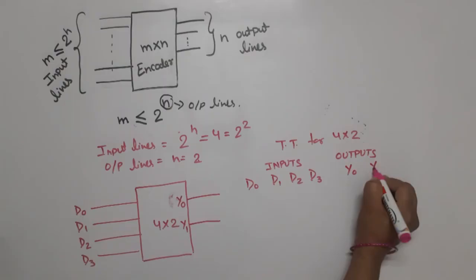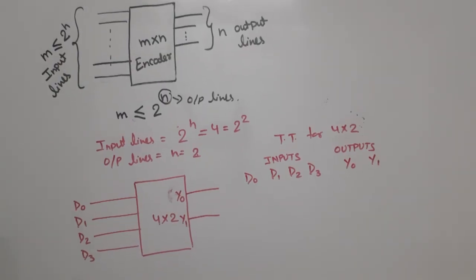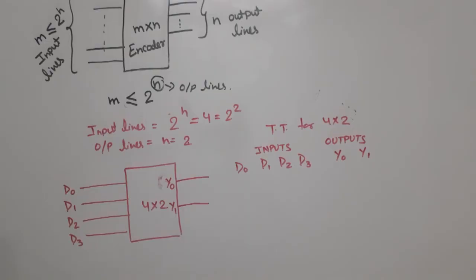One important thing about encoders: at a time, only one input will be high, and we get the corresponding output. For example, if D0 is 1, then all remaining will be 0, and the output is 00.